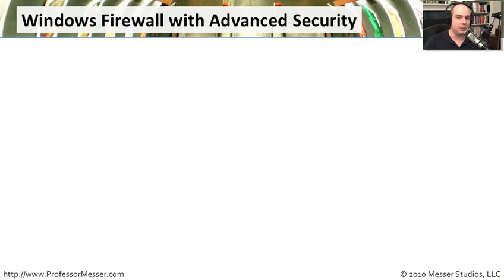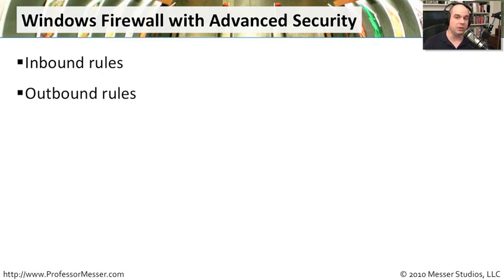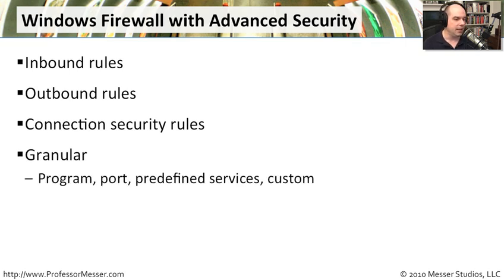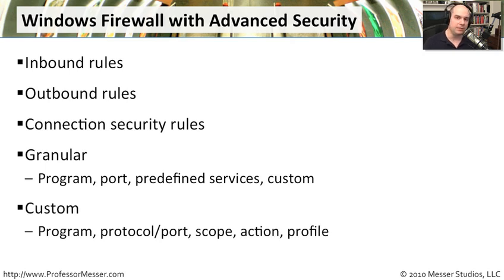Windows Firewall with Advanced Security takes this to a completely different level, giving us a lot more control and customization. First, we can have separate inbound and outbound rules — much more control than the basic front end. We can also provide connection security rules for VPN-type connections. There's a lot of granularity: you can set up rules by program, port number, or predefined services. There are also custom views based on program, protocol port, scope, action, and profile.